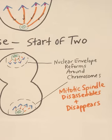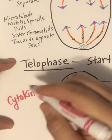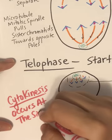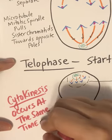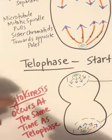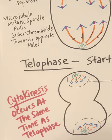Now it's easy to add cytokinesis into this lecture. Cytokinesis is the end of the cell cycle, but it occurs at the same time as telophase. Cytokinesis is the division of your cytoplasm, and it's going to finish dividing the cells into two.